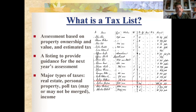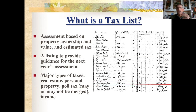A tax list is an assessment — it's not really the taxes themselves. It may have notations about whether the tax was paid, but it's really just a list of who was assessed for property ownership, the value of the property, and the estimated tax. It's also a listing to provide guidance for the next year's assessment. You'll sometimes see two copies because one copy was oriented toward the next year's assessment.